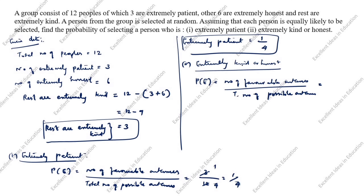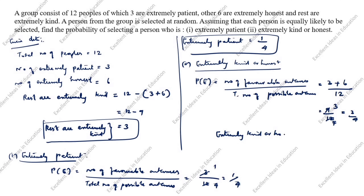Extremely kind or honest. Number of extremely kind persons is 3. So the favorable outcomes equal number of extremely kind, that is 3, plus number of extremely honest, that is 6, divided by total number of possible outcomes, which is 12. 6 plus 3 is 9. 9 divided by 12 — 3 threes are 9, 4 threes are 12 — equals 3 by 4. So the second answer: probability of selecting an extremely kind or honest person equals 3/4.